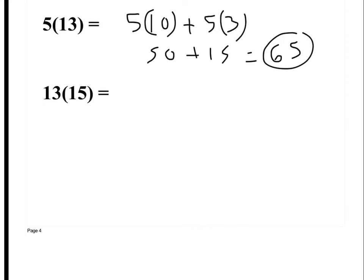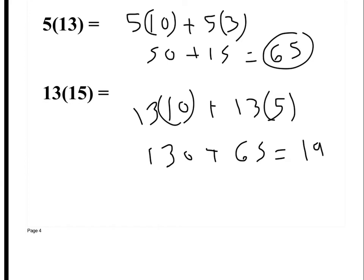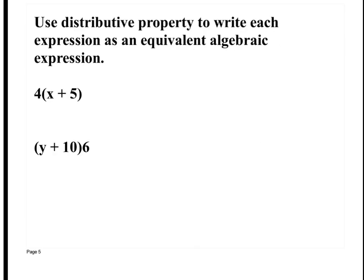But 13 times 15, that one we don't know. So in my head, I'm writing it out, but in your head, because it says mentally, I would do 13 times 10 and I would do 13 times 5 because I know both of those. 13 times 10 is 130, 13 times 5 is 65. So I know my answer is 195. That's what you should do in your head. Split up 15 into 10 and 5. That's what distributive property helps us out with.